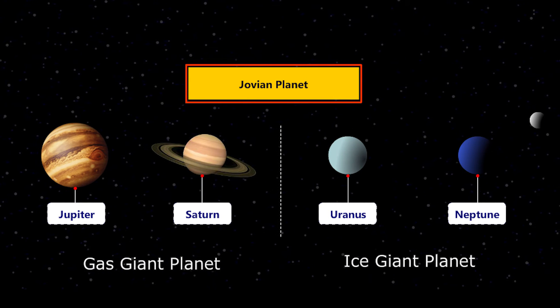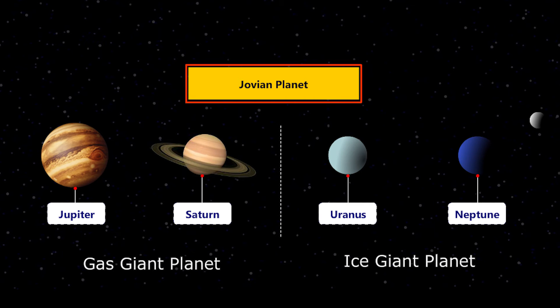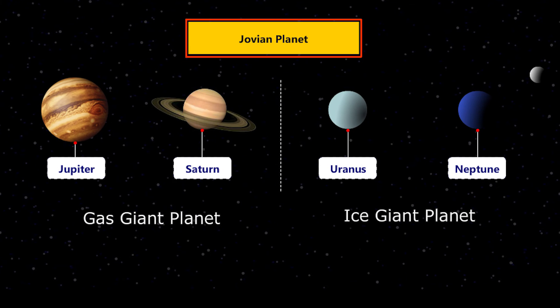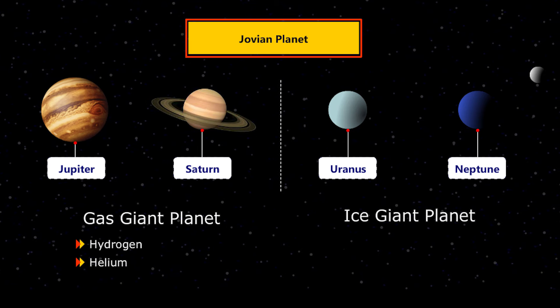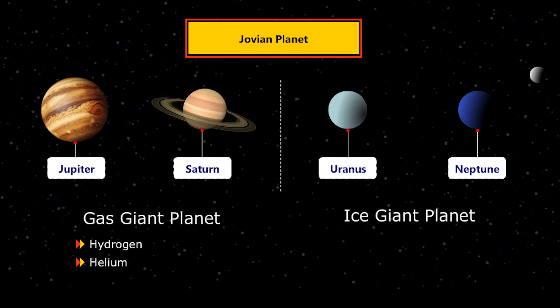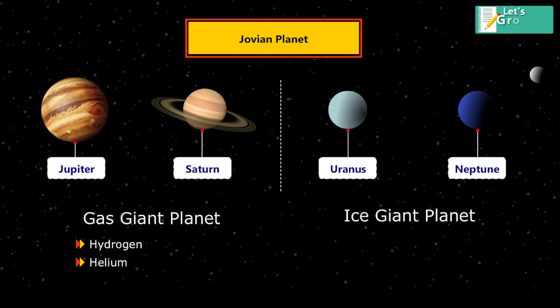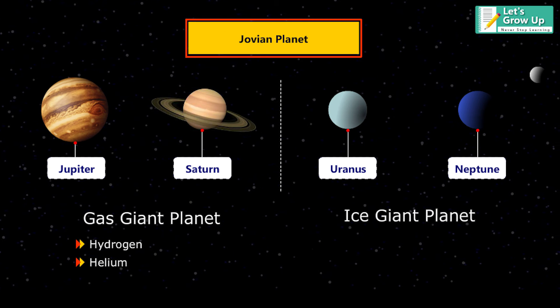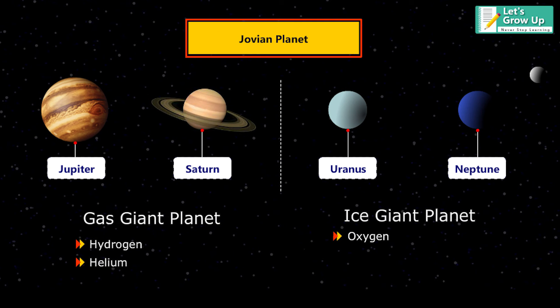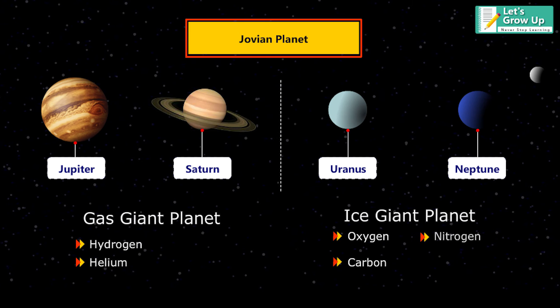Jupiter and Saturn are gas giant planets. Uranus and Neptune are ice giant planets. Gas giant planets are composed mainly of hydrogen and helium. An ice giant is a giant planet composed mainly of elements heavier than hydrogen and helium, such as oxygen, carbon, nitrogen, and sulfur.